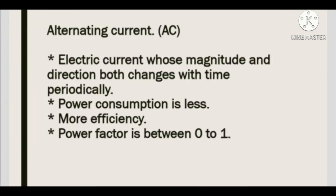Alternating current (AC): Electric current whose magnitude and direction both change periodically with time. As time changes, both the magnitude and direction of electric current keep changing. Power consumption is less, efficiency is more, and the power factor is between 0 and 1.